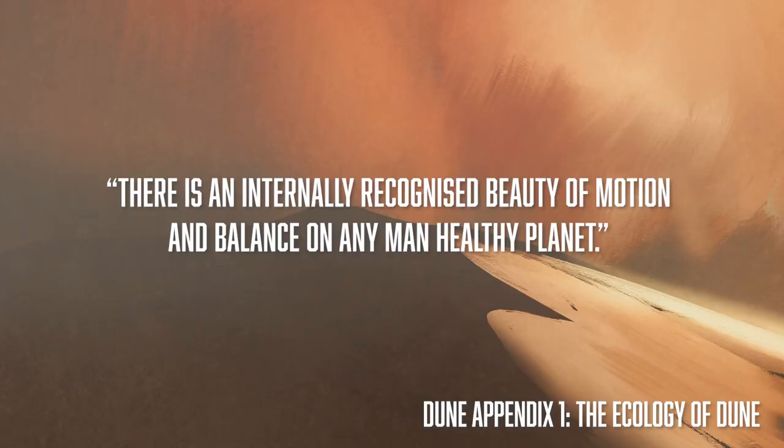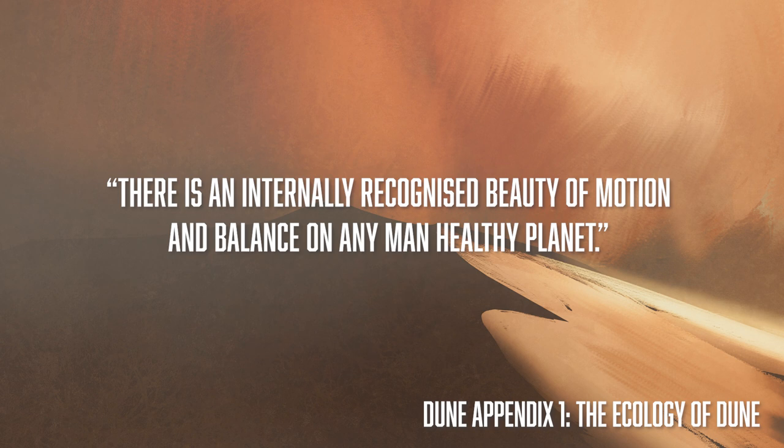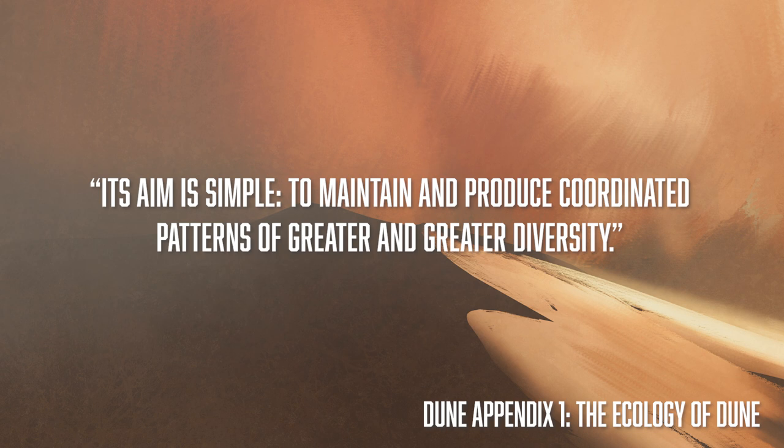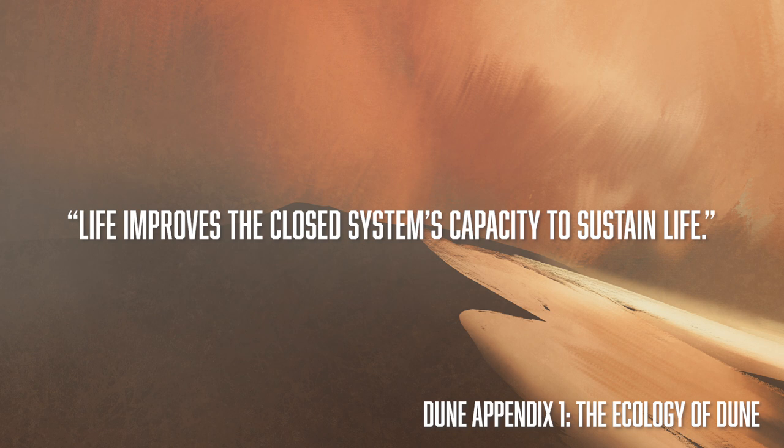In Dune Appendix 1, The Ecology of Dune, Pardo Keynes, the imperial planetologist of Arrakis, puts it like this: "There is an internally recognised beauty of motion and balance on any man-healthy planet. You see in this beauty a dynamic stabilising effect essential to all life. Its aim is simple: to maintain and produce coordinated patterns of greater and greater diversity. Life improves the closed system's capacity to sustain life."